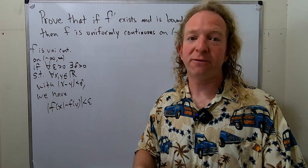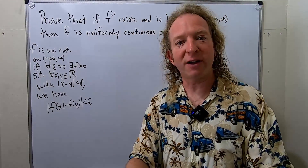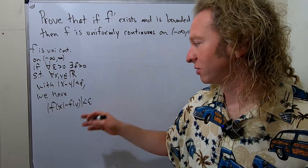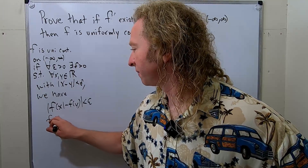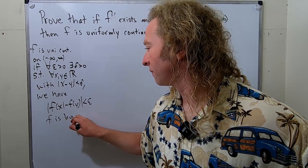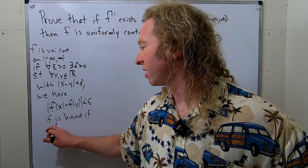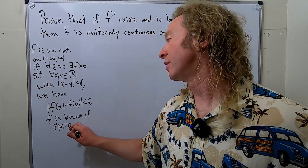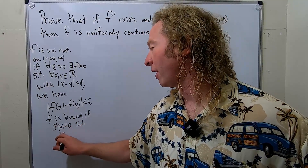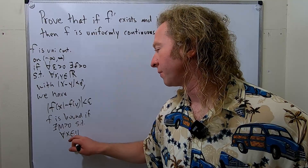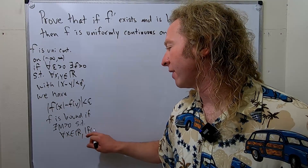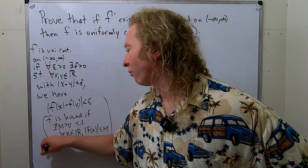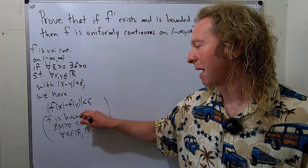A function is bounded if whenever you take the absolute value of that function, it's less than a number for every x. So f is bounded if there exists a constant m, which we can assume is positive, such that for all x in ℝ, the absolute value of f(x) is less than or equal to m.